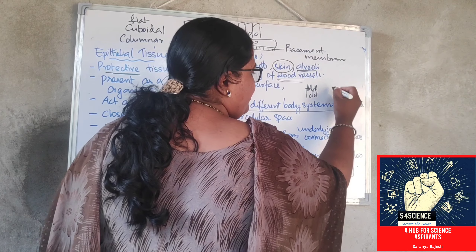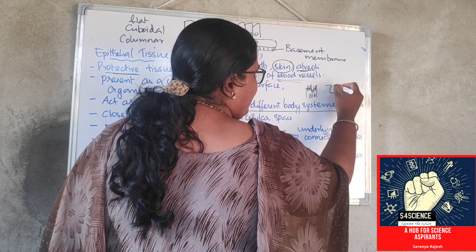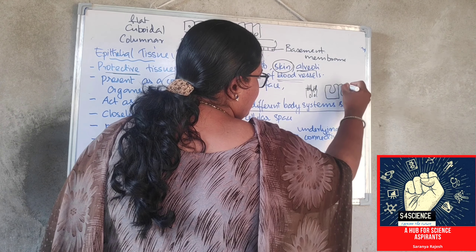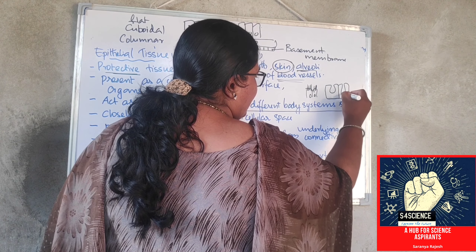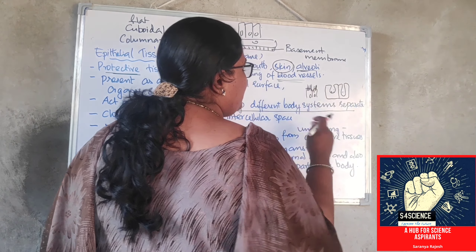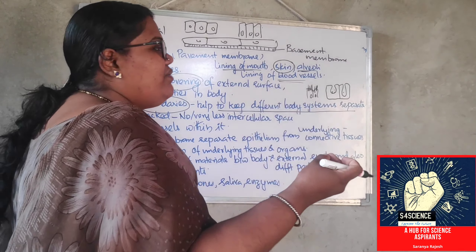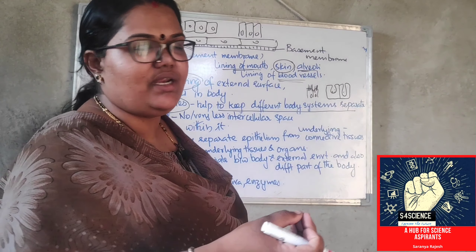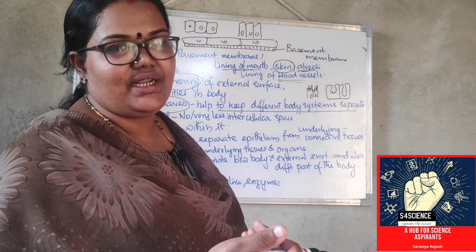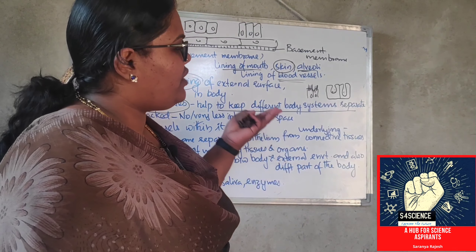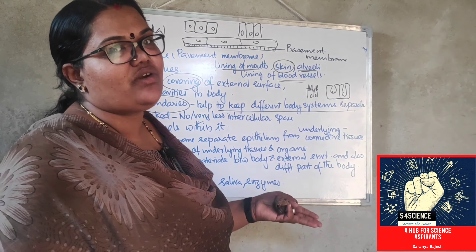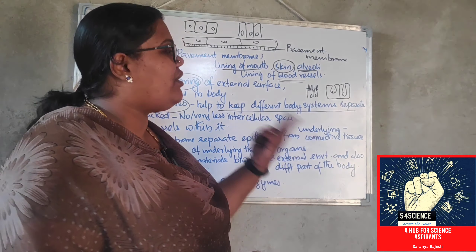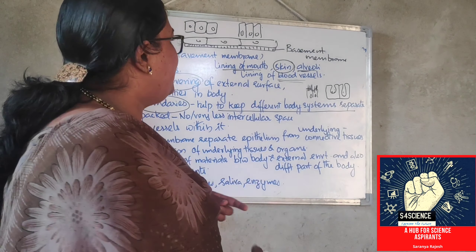Sometimes in columnar or cuboidal epithelial, you can see that glands will be present. These glands are secretory in function — they will secrete enzymes or hormones onto the surface. So they can also be secretory in function. If glands are present in them, then it is called glandular epithelial. Glandular epithelial can be cuboidal or columnar.